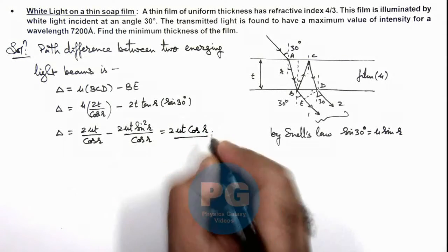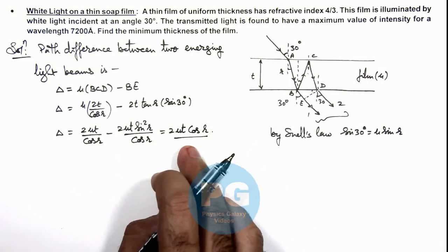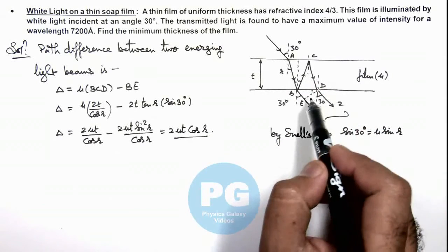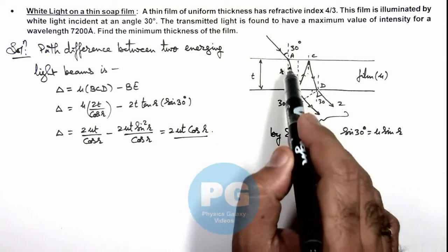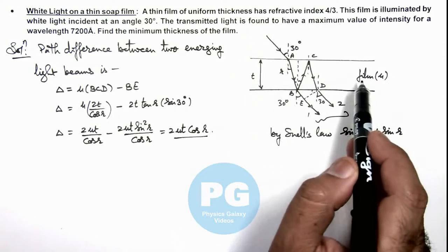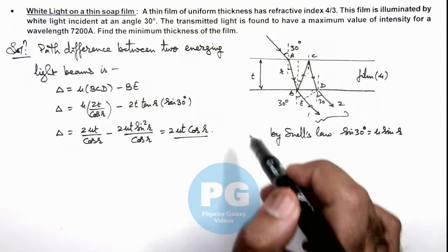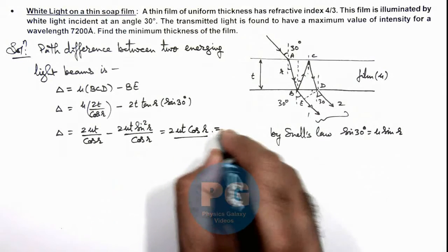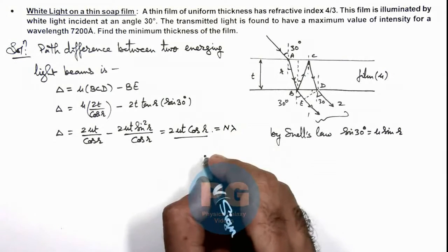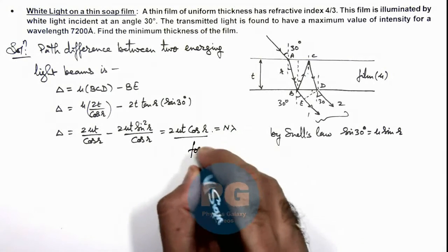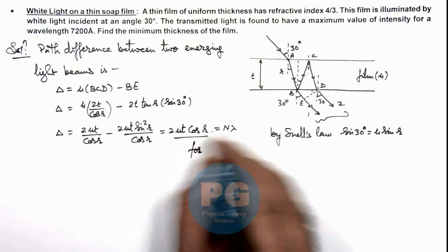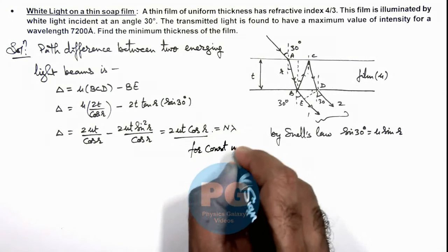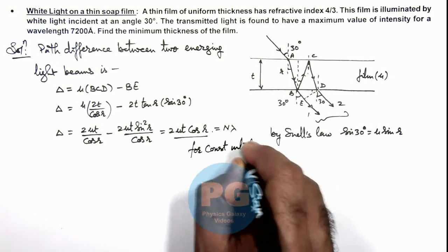This is the result which is quite useful for the path difference in the two transmitted beams when a light beam incident on a thin film at an angle of incidence i. So in this situation, when this path difference is equal to n lambda, we can write constructive interference takes place. So here we can write when this is n lambda, this is for constructive interference.